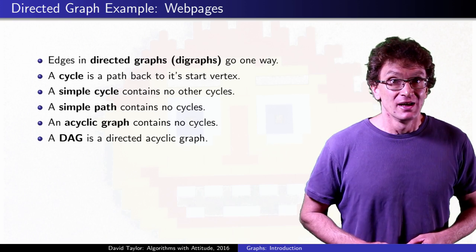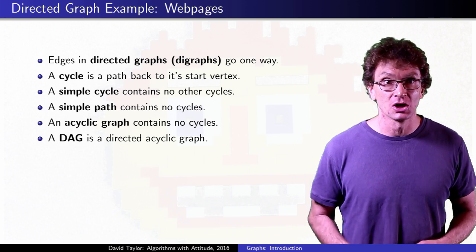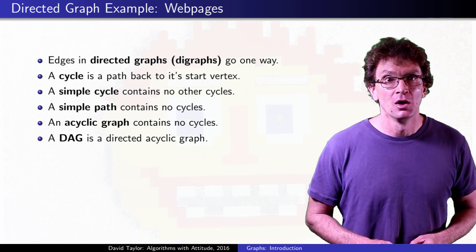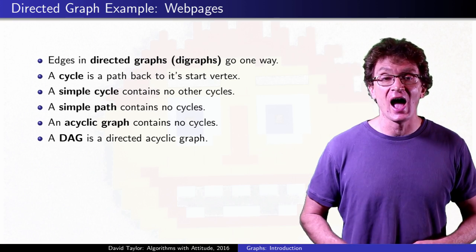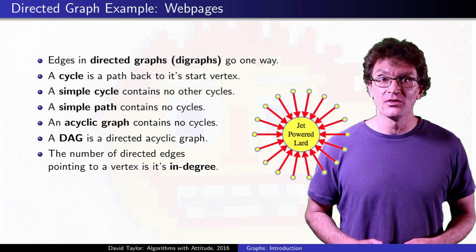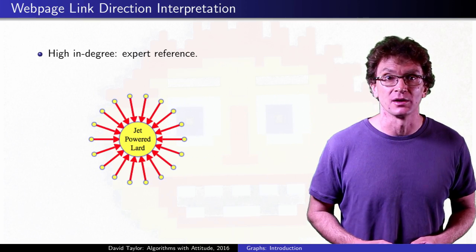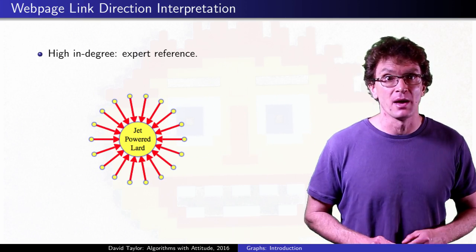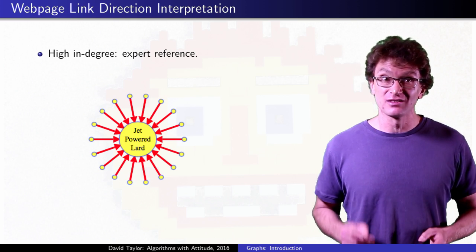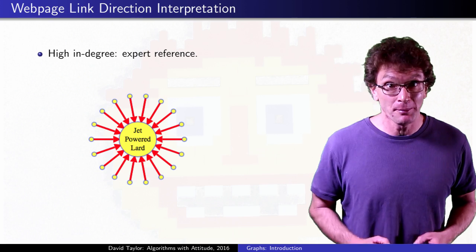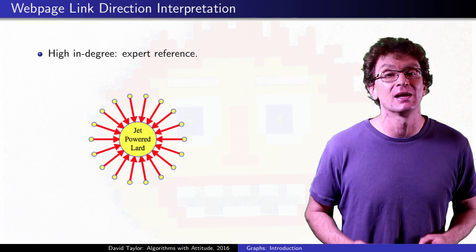For web pages, it makes sense to think of the edges going from the page with the link, to the linked page. What do links tell you about a page? What does it mean if a page has a high in-degree? Well that page is probably an authoritative or expert page on something. If you have a thousand different web pages out there, all talking about butterflies, and they all have a link to one page, that page probably has something to do with butterflies, even if it doesn't have the word butterfly anywhere on it.